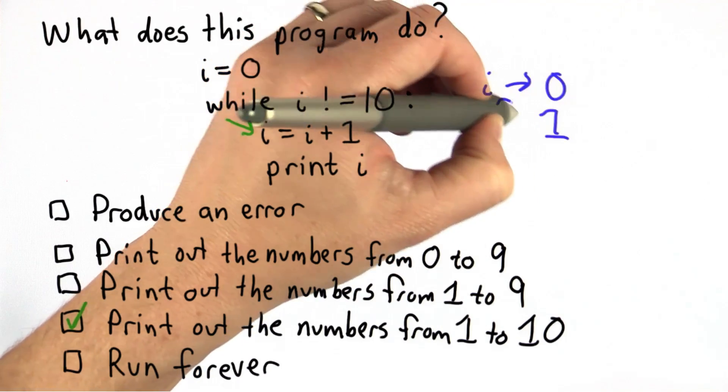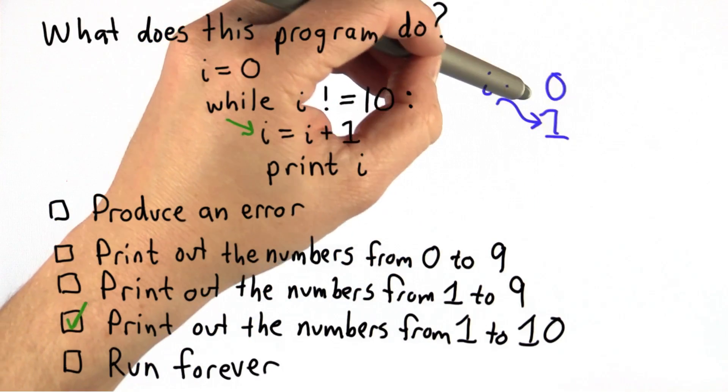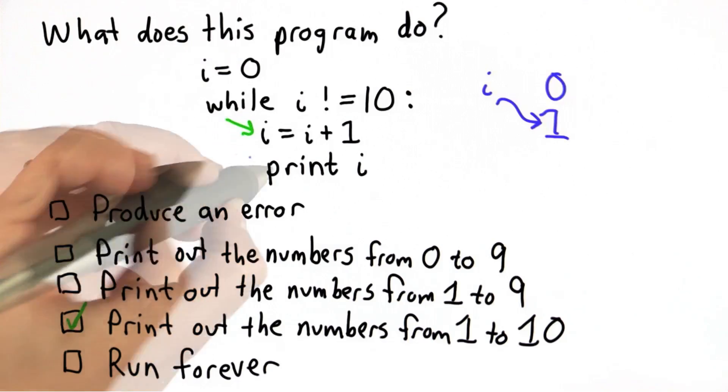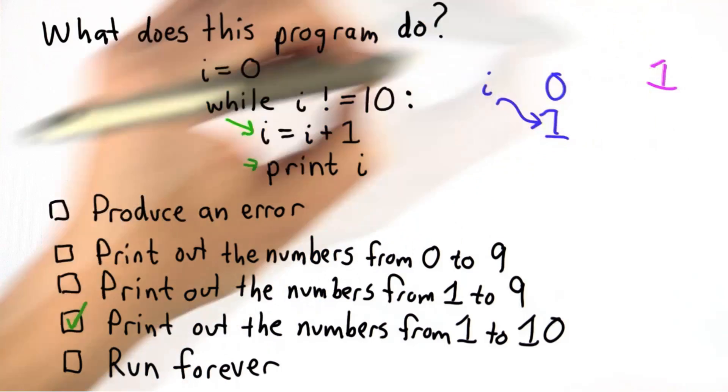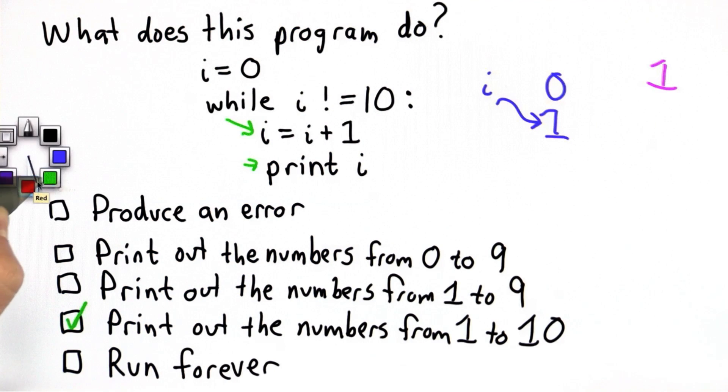And the block adds 1 to i, so that will change the value of i. Now i refers to 1. And then the next statement prints the value of i. The value of i now is 1, so it'll print 1. And then because it's the while, we go back.